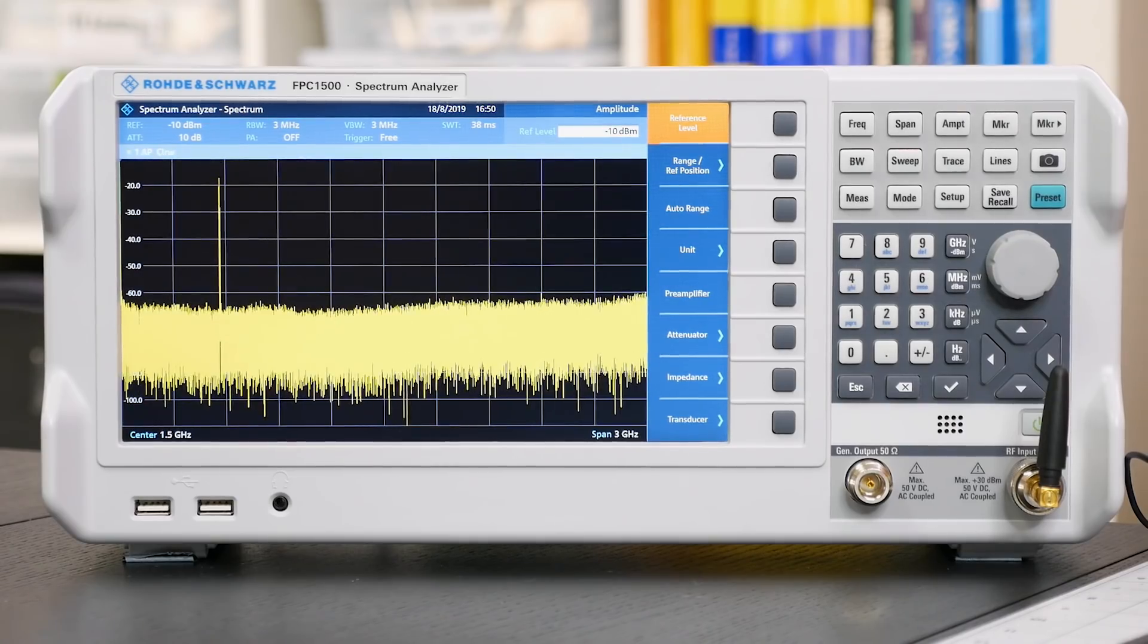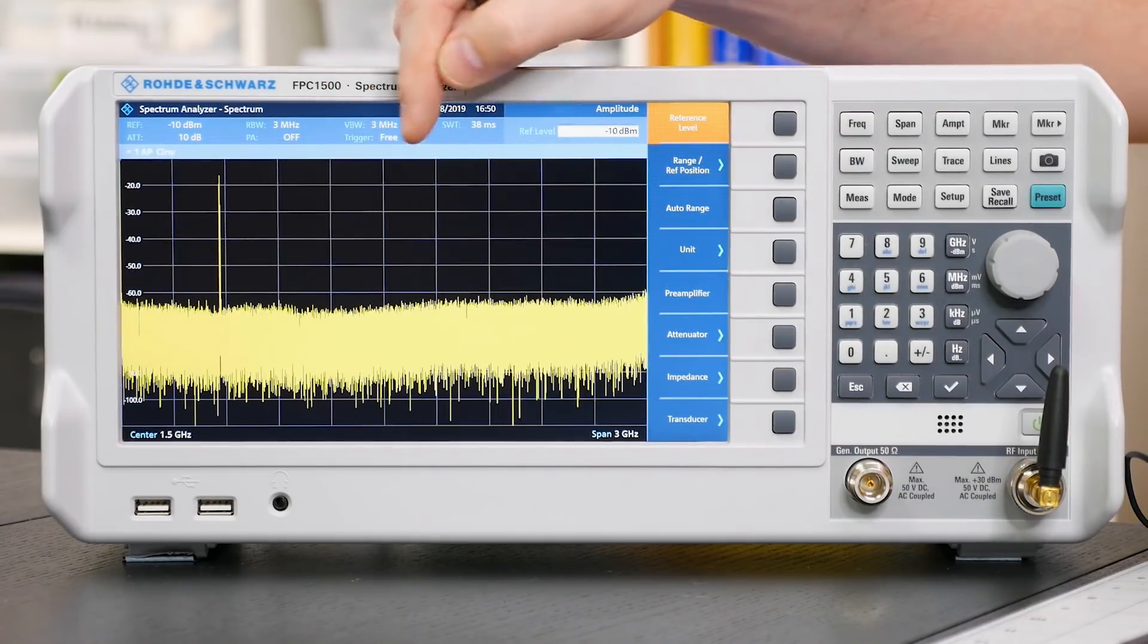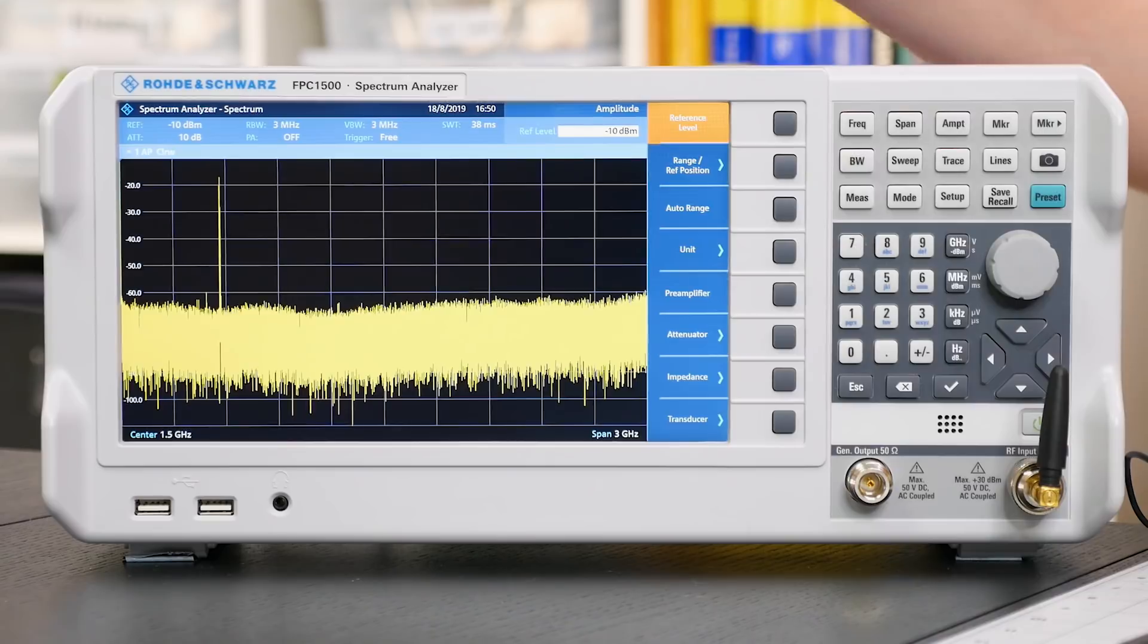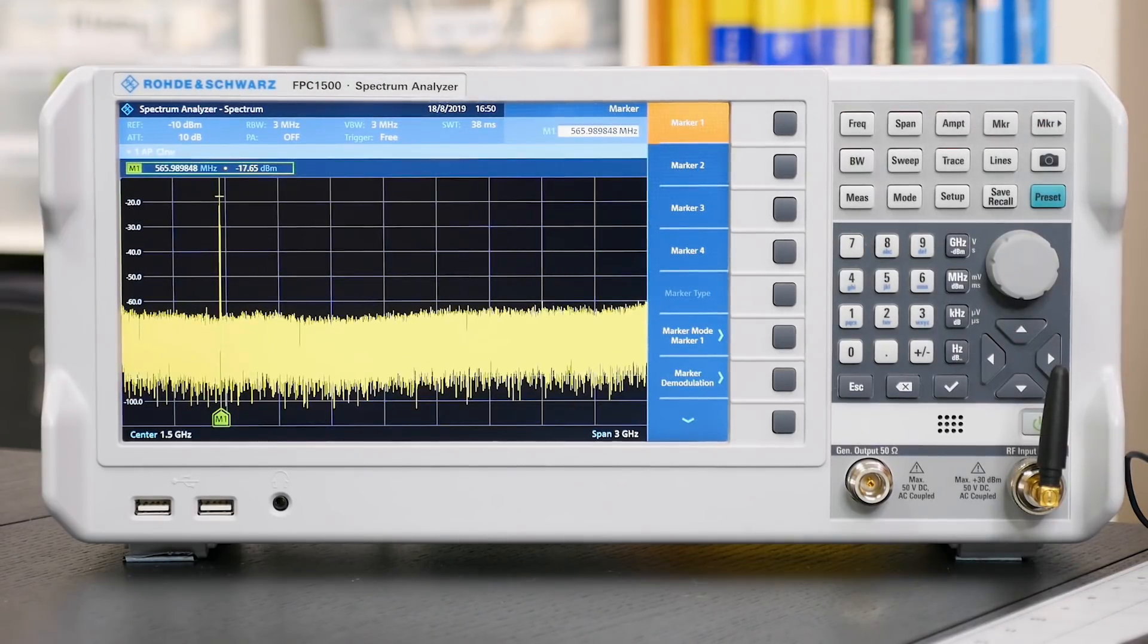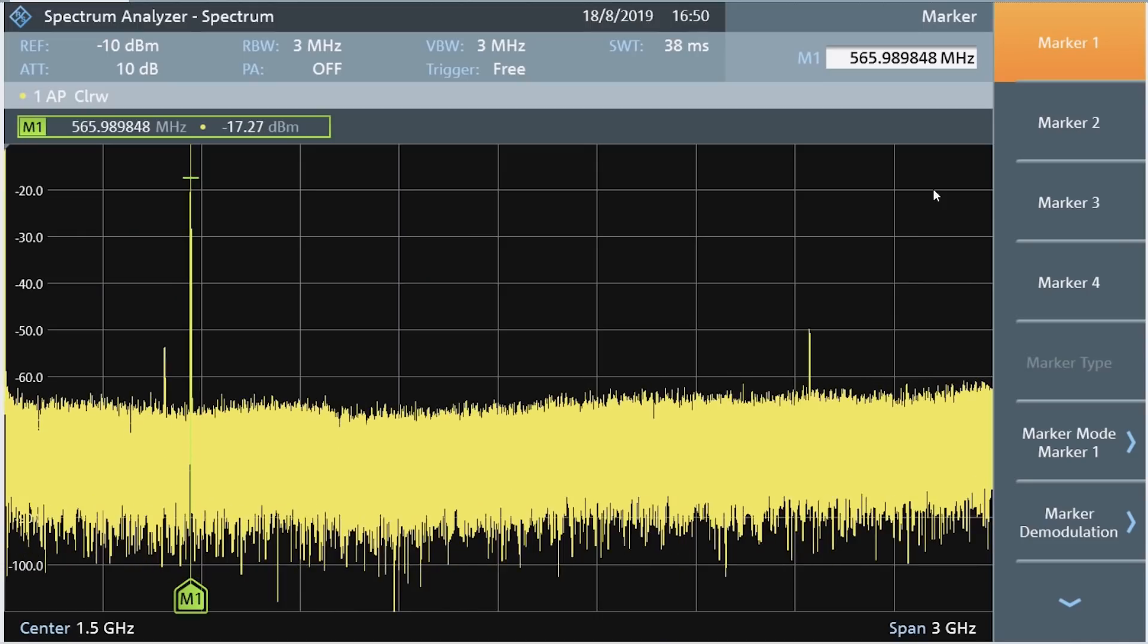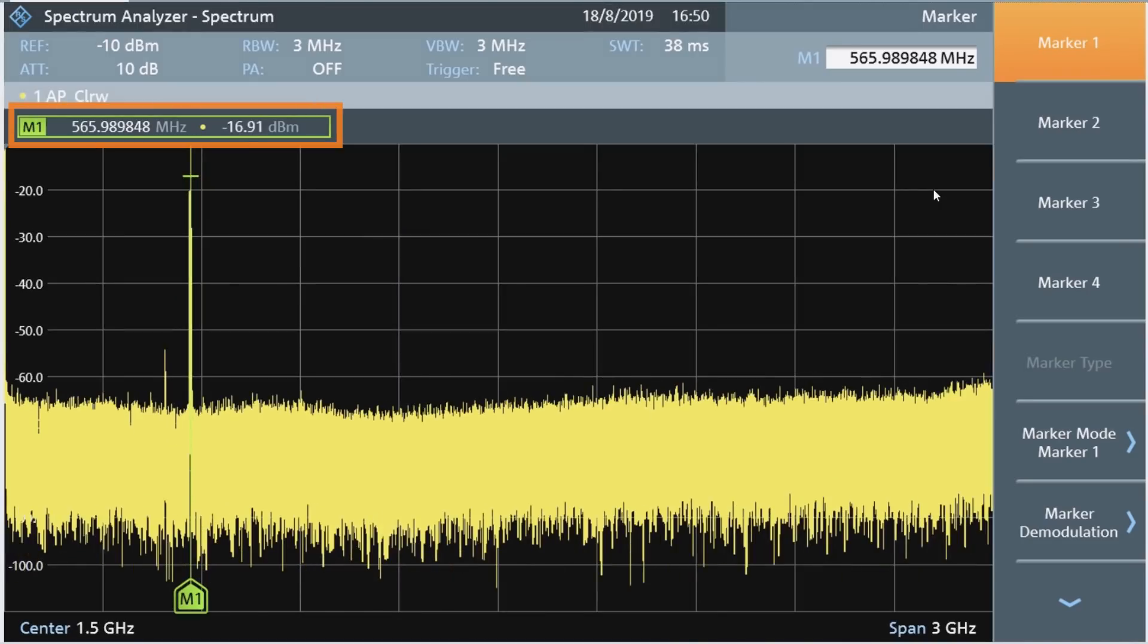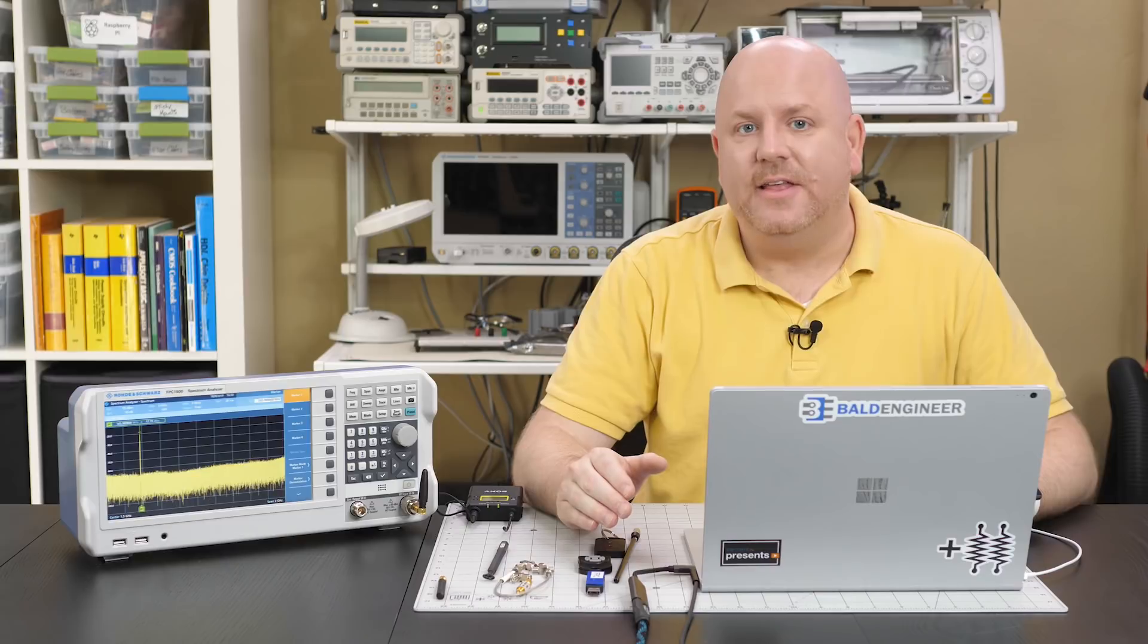To me, reading a spectrum analyzer screen isn't all that intuitive. You sort of have to do math to figure out where all the frequencies are. So, to find the value of this peak, I am just going to turn on a marker. The cool thing is, markers usually just snap to the highest peak on the display. And in this case, I can see the number is 565.989 MHz, which is a number we will need in the next step.